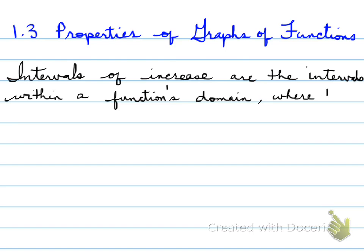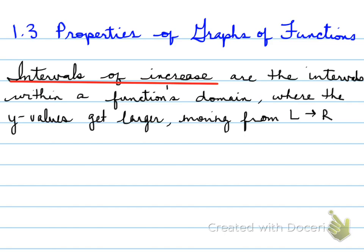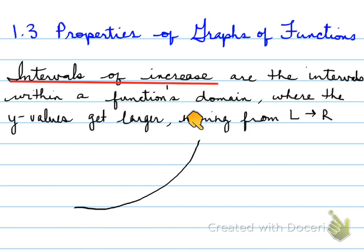Intervals of increase are the intervals within a function's domain where the y values get larger, moving from left to right. So as we move from left to right, the y values are increasing. If we have an x and y axis and a graph moving up, what we'll see is that from left to right, the y values are moving up.